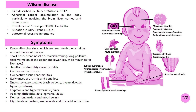Wilson disease is a rare genetic disorder characterized by the accumulation of copper in various tissues, particularly the liver and brain. This buildup of copper leads to oxidative damage and affects multiple organ systems, resulting in a range of symptoms. Symptoms of Wilson disease include copper accumulation, hepatic, neurological, ocular system, skeletal abnormalities and spinal issues.